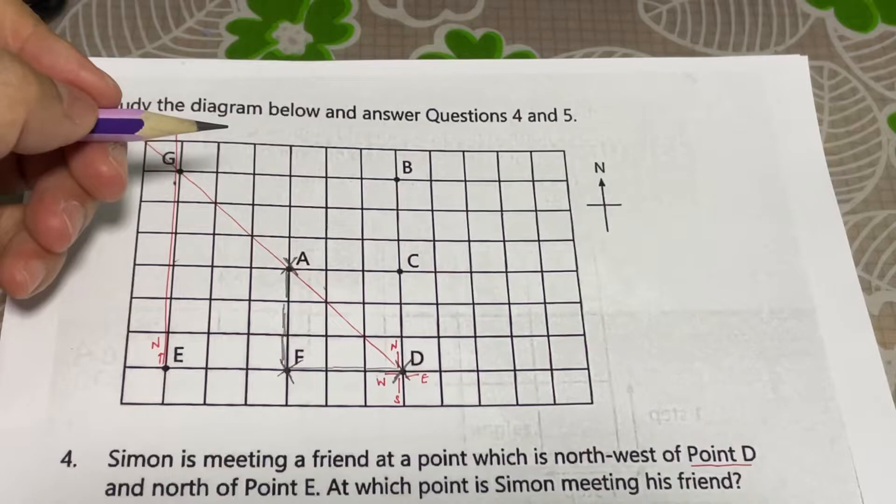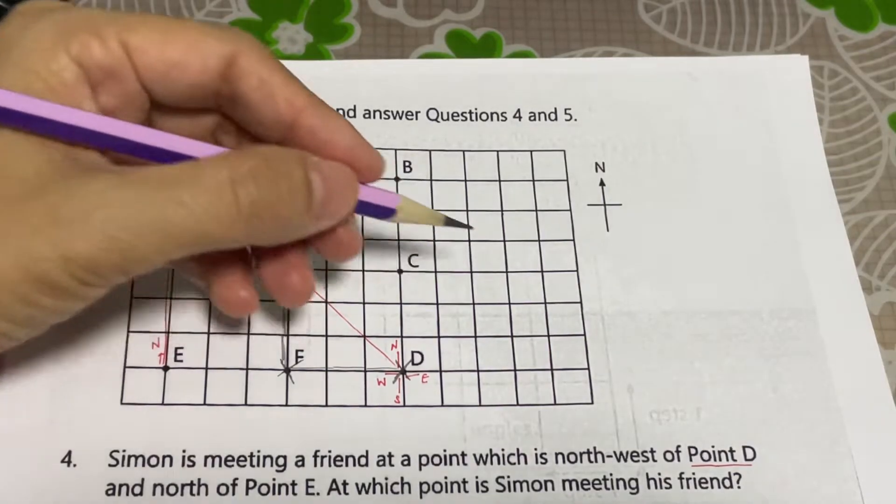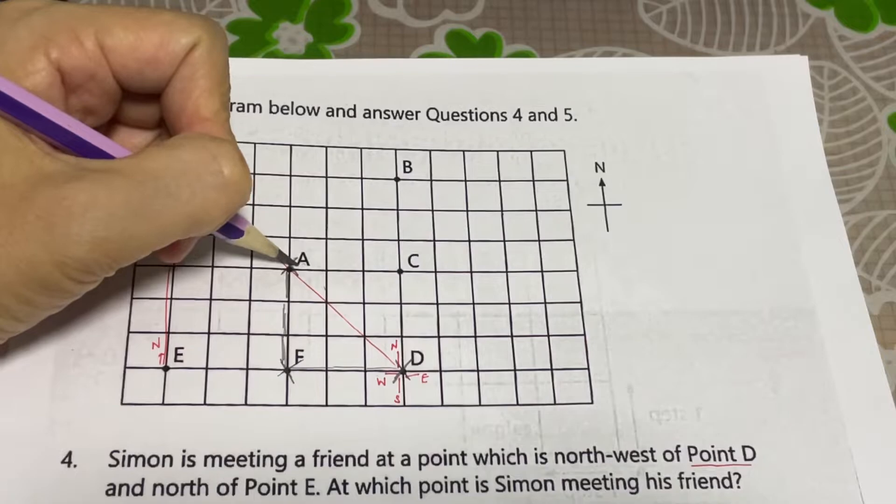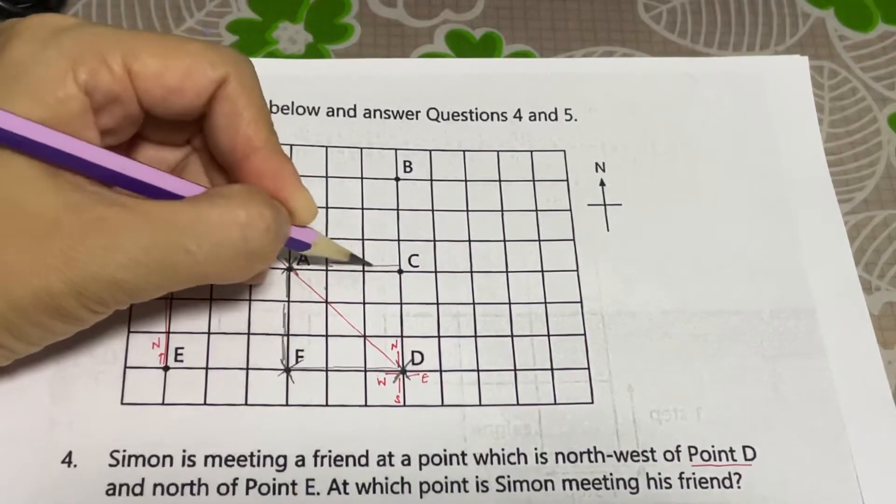Followed by 3 steps to the east. Now, east will be towards the right. So, 1, 2, 3.